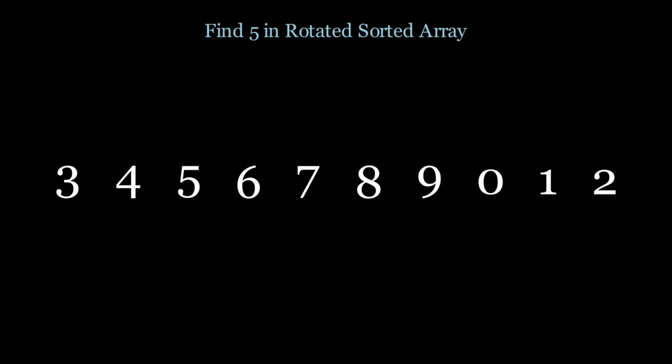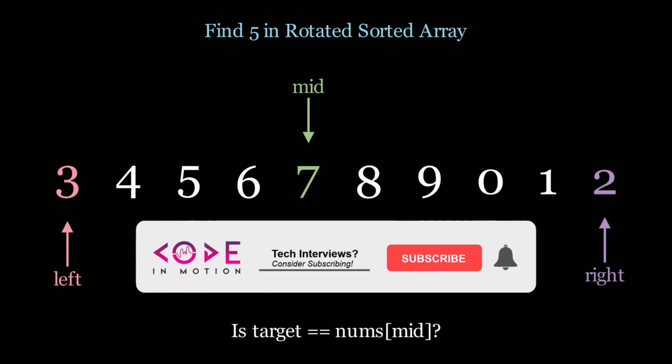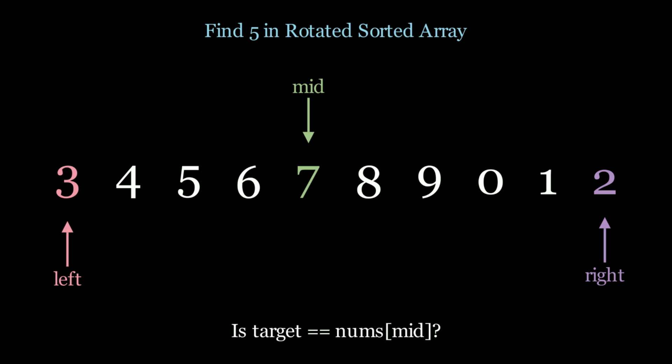The first time I saw this, I didn't know where to start. I drew out a rotated sorted array and started asking myself questions. The first case I want to go through is: what if I want to find the target 5 in this array? How would that be different from regular binary search? The target is in the left portion of the array. I have my left and right pointers, and my mid value is 7. The question we always ask is: is the target equal to the mid value? It's not — I'm looking for 5 but mid is 7. So we need to choose between the left or right subarray. Take a look at the left and mid values: the left value is smaller than the mid value.